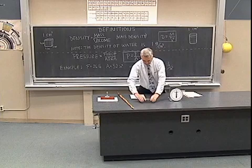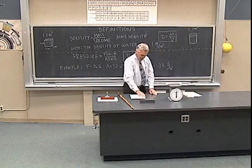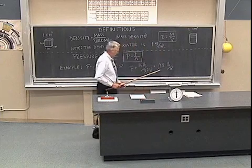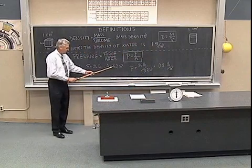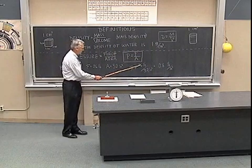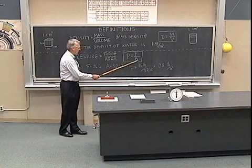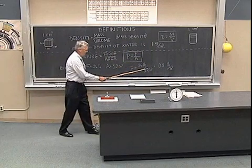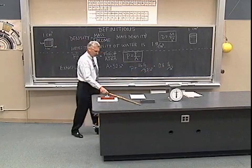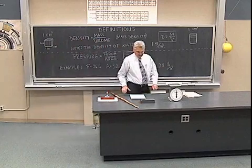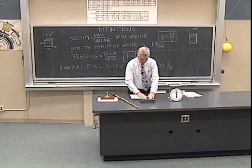So as that block rests on the table, the block is pushing against the table with a force of 26 pounds, cross-sectional area of 32 square inches, and we divide 26 pounds by 32 square inches plugging into this equation here. That gives us 0.8 pounds per square inch as the pressure on the table under the block of lead.